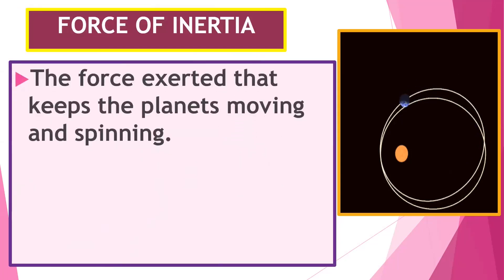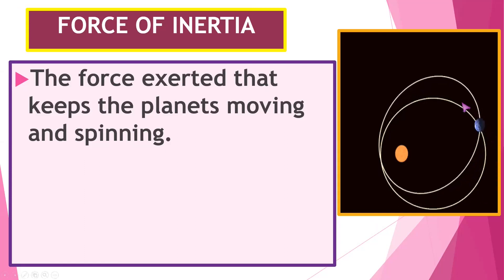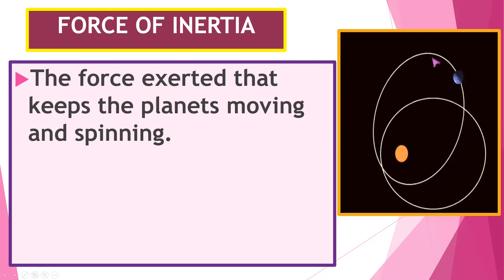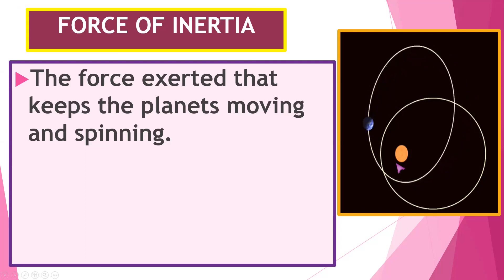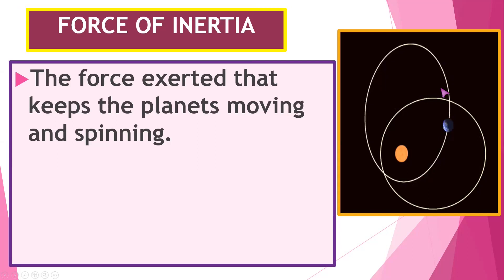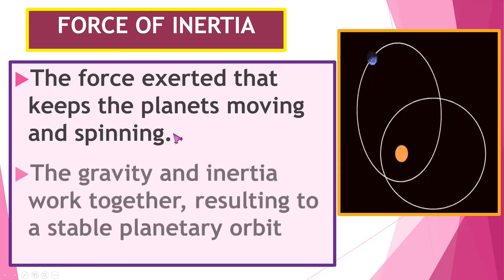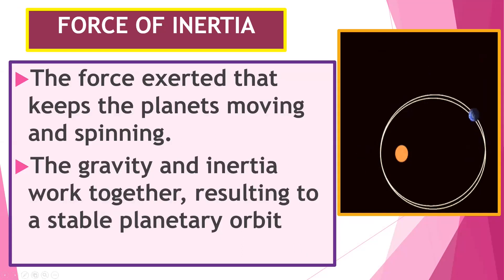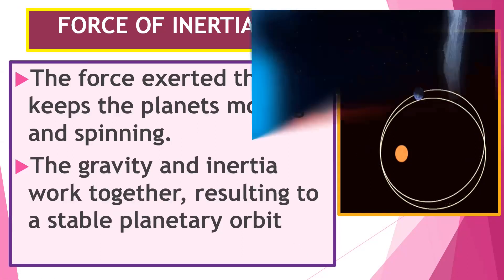In the force of inertia, the force exerted keeps the planets moving and spinning. If you remember what inertia is — an object at rest remains at rest; an object in motion will continue to move unless there is an unbalanced force acting upon it. Then it will change its state of motion. Gravity and inertia work together, resulting in a stable planetary orbit.